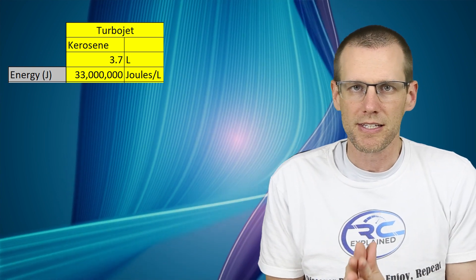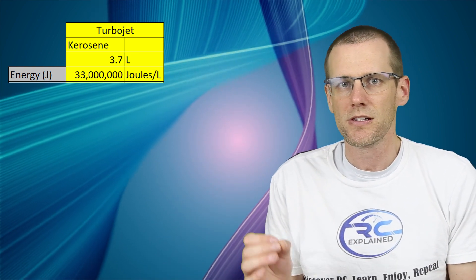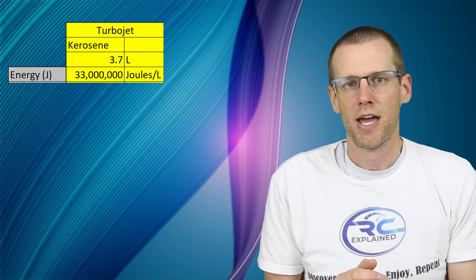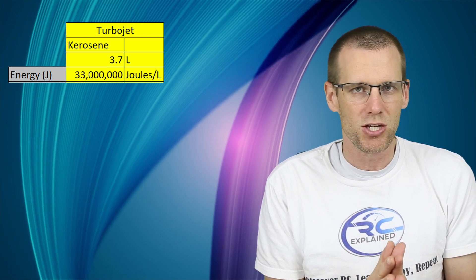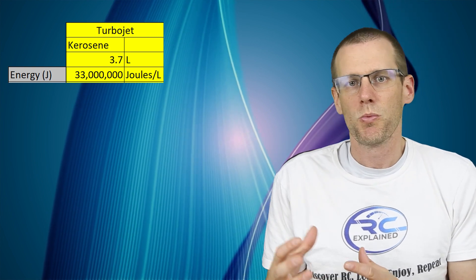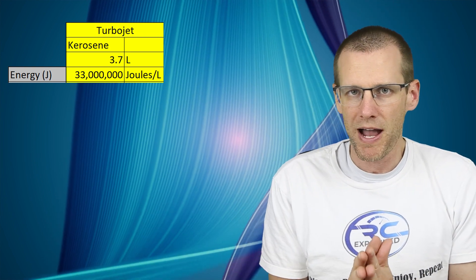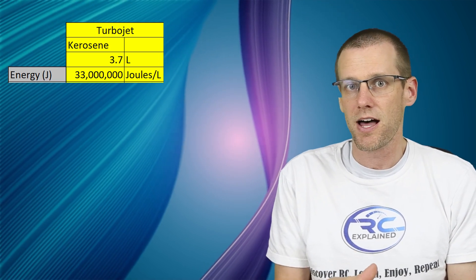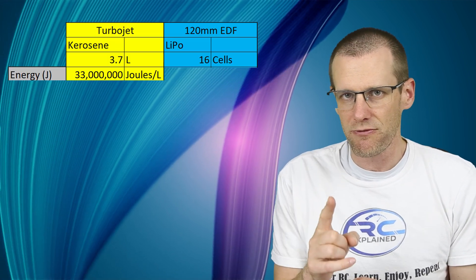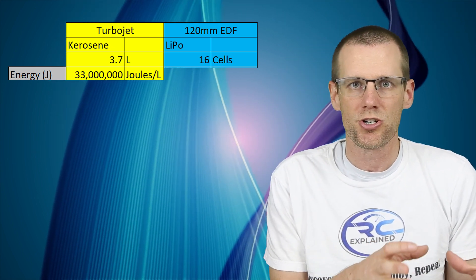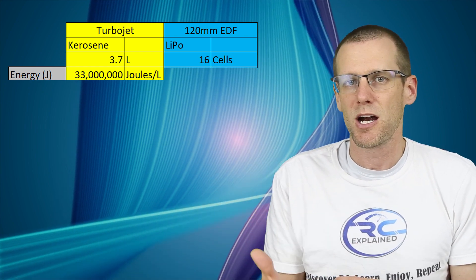When we look at 3.7 liters of fuel, every single liter of jet fuel has 33 mega joules of energy. And this is kind of significant because that value is certainly a lot. When we look at a lithium polymer battery pack, what we're going to do here in this video is we're not going to use just a four cell or an eight cell or even a 12 cell. We're going to jump all the way up to 16 cells. And the reason for that is because we need quite a bit of power in order to move a larger jet along.